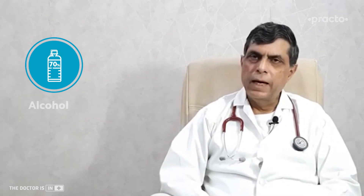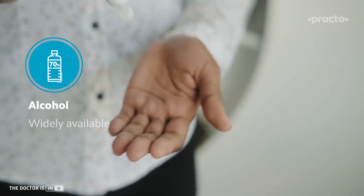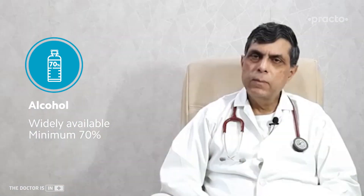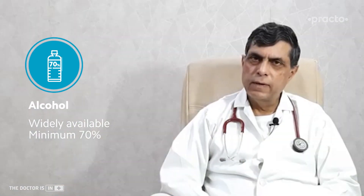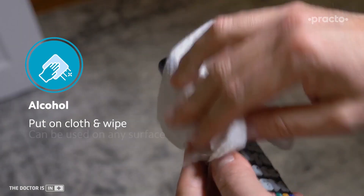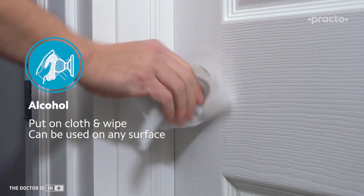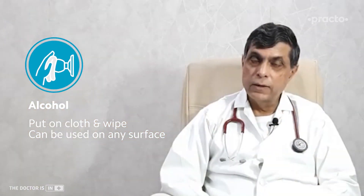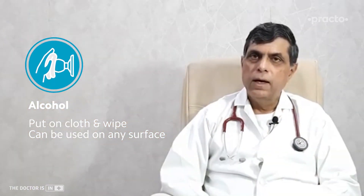The next thing we can use is alcohol. Alcohol is readily available to us in our hand sanitizers and it has to contain a minimum of 70% alcohol. We can wet a piece of cloth or gauze with alcohol and rub it on commonly used surfaces like knobs, door handles, and rods as in bathrooms, and this disinfects the area perfectly.